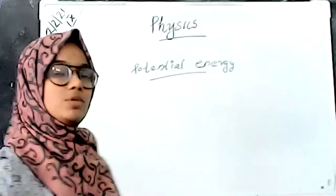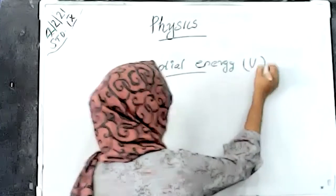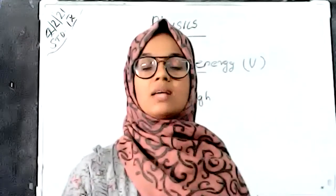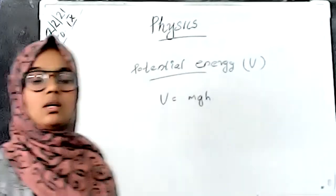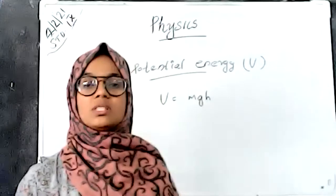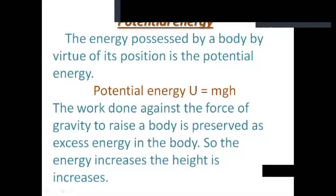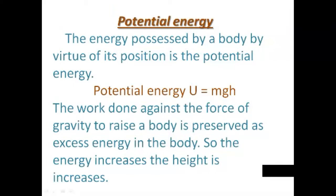The potential energy u is equal to mgh. We denote potential energy by the letter u. Here m is the mass of the object, h is the height of the object, and g is the gravitational constant. The energy possessed by a body by virtue of its position is the potential energy. When a body is at rest, the position of the body gives or possesses an energy to the body — that is known as potential energy. By virtue of its position, the energy is potential energy; by virtue of its motion, the energy is kinetic energy. The equation connecting potential energy is u is equal to mgh.